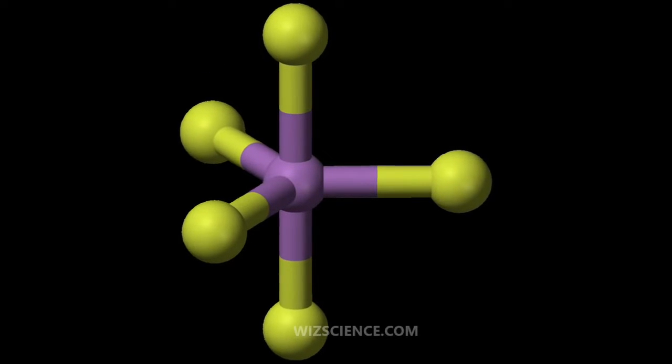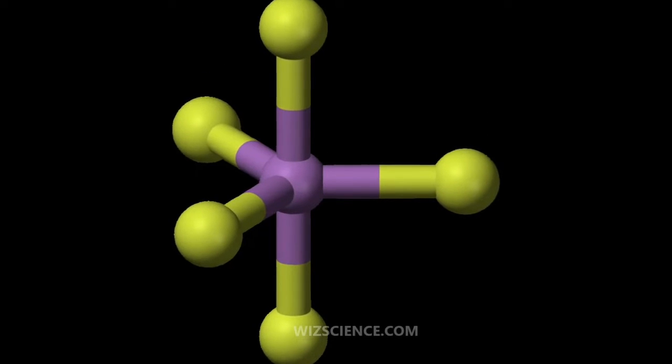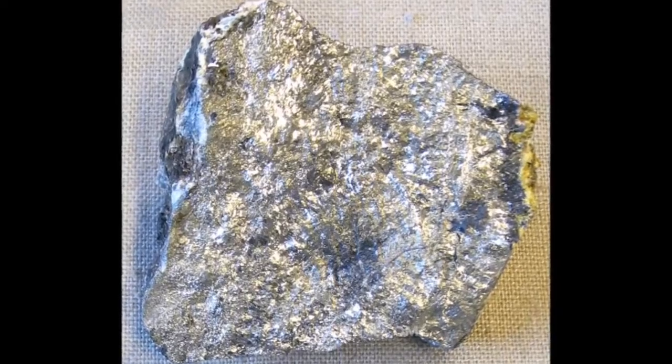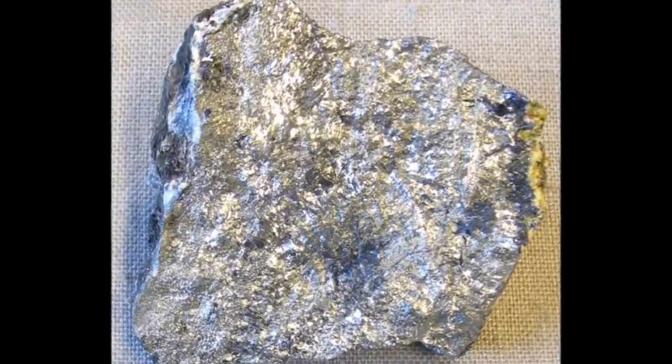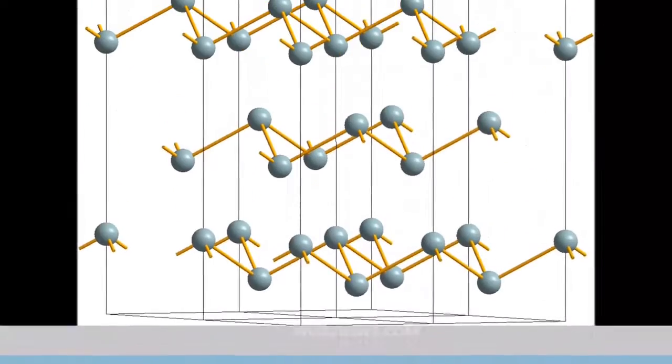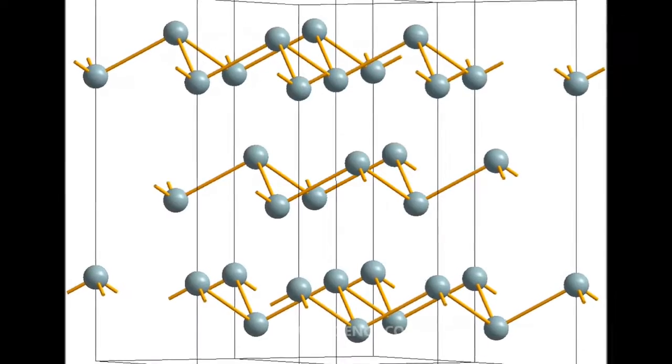Antimony is in the nitrogen group and has an electronegativity of 2.05. As expected from periodic trends, it is more electronegative than tin or bismuth, and less electronegative than tellurium or arsenic.